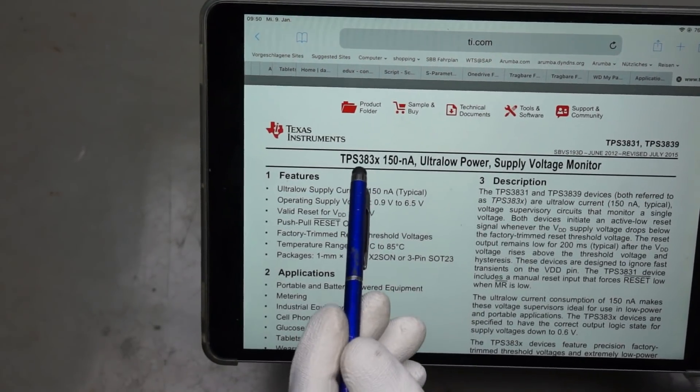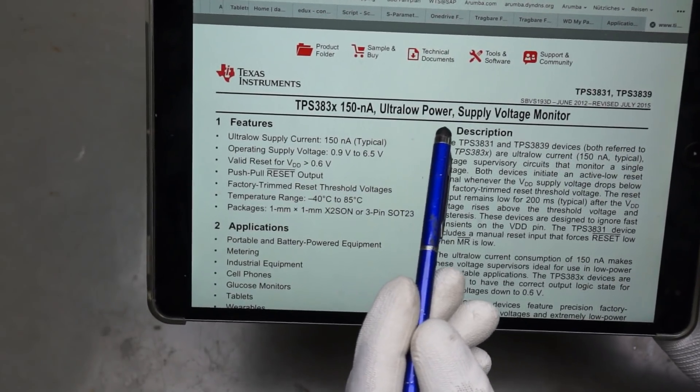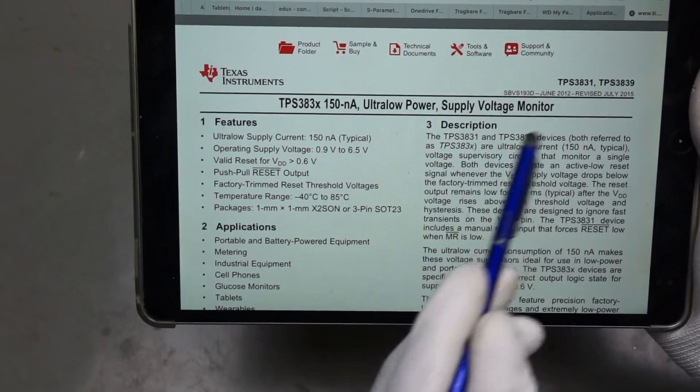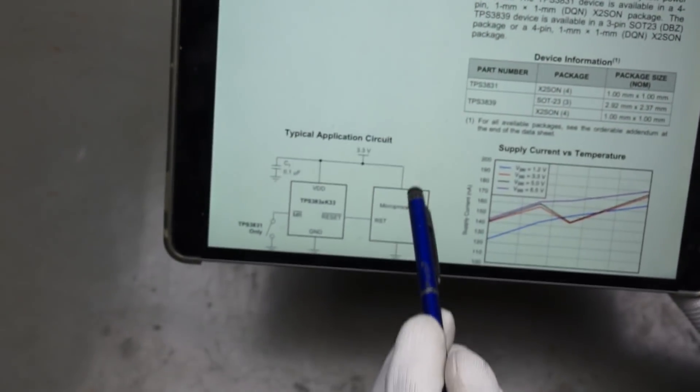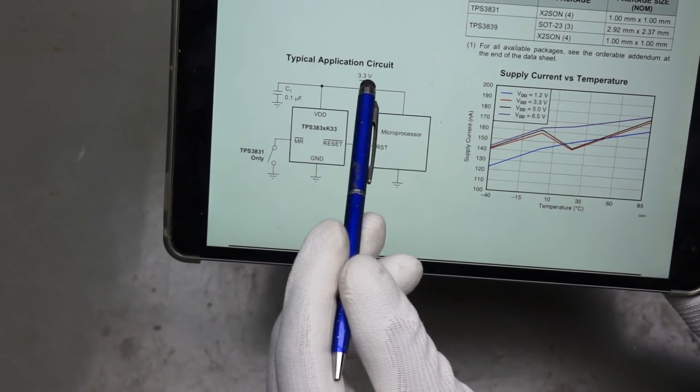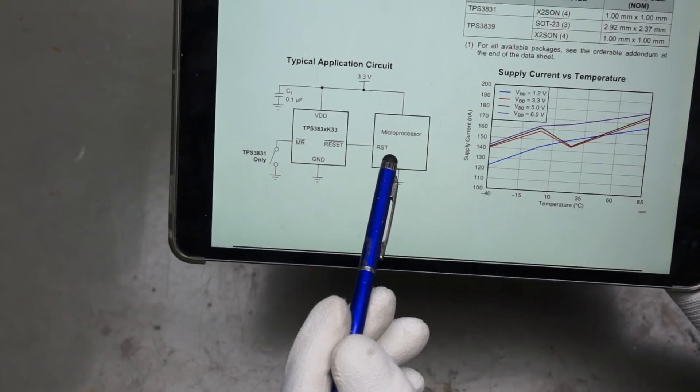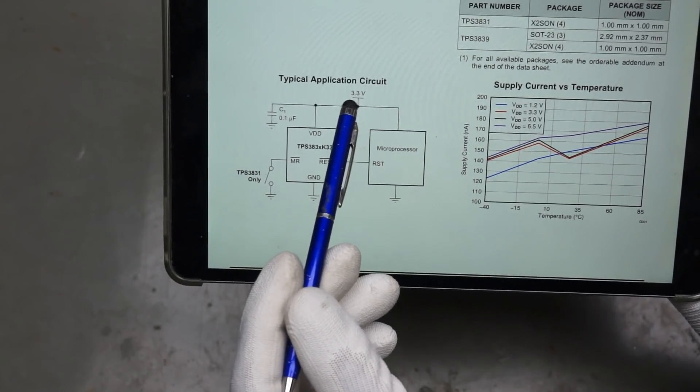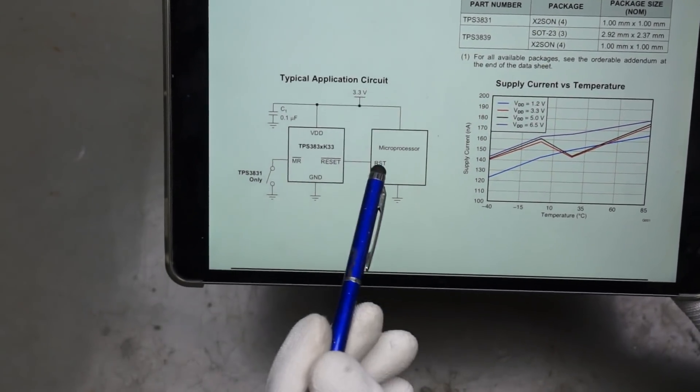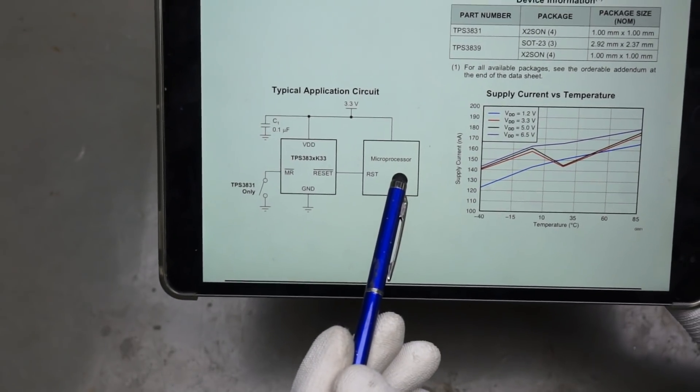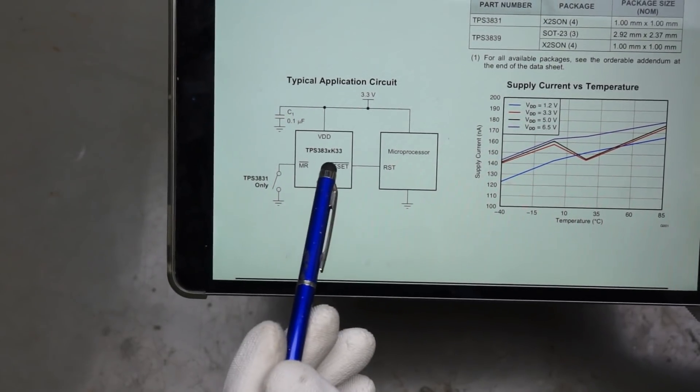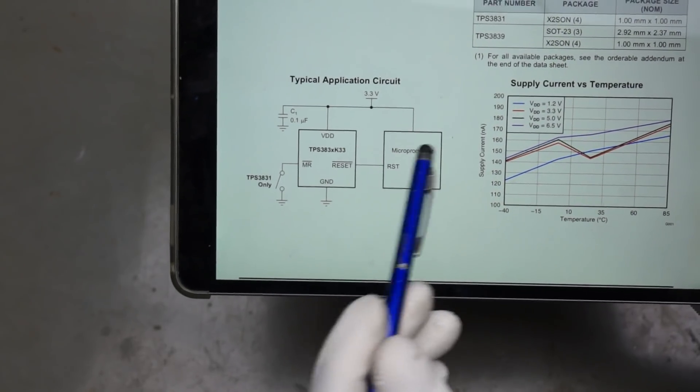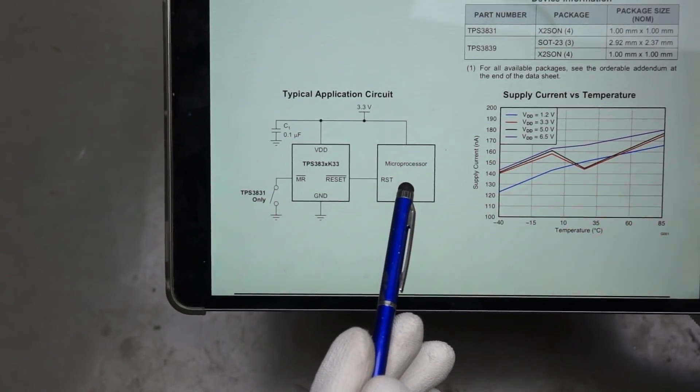These TPS383X are ultra-low power supply voltage monitors. And how are they used or what is the purpose of a supply voltage monitor? We connect them to the power of the microprocessor and to the reset pin of the microprocessor. And if the voltage here, for example, is less than around 3 volts, then the microprocessor is reset.